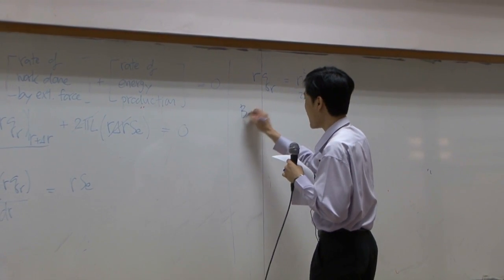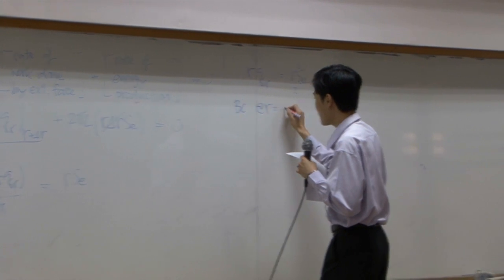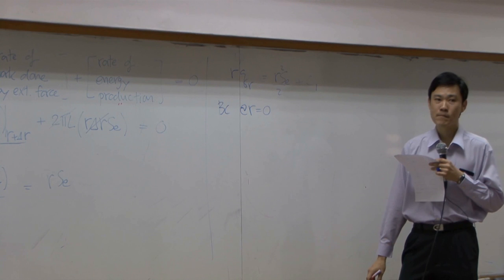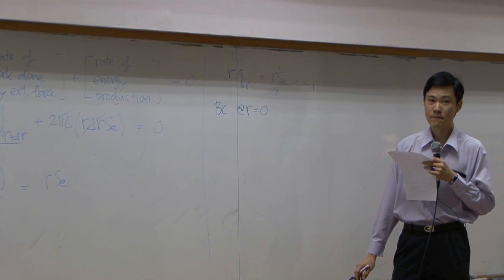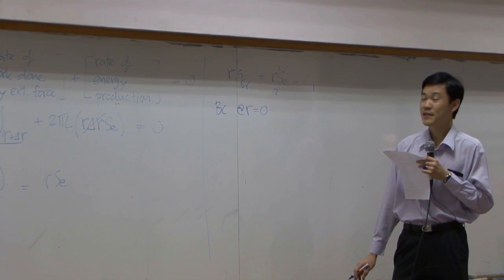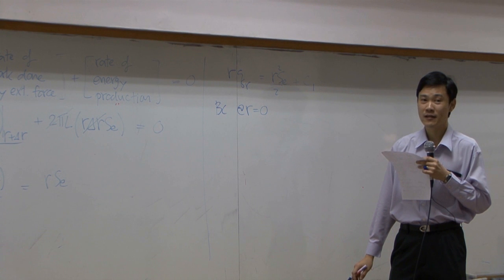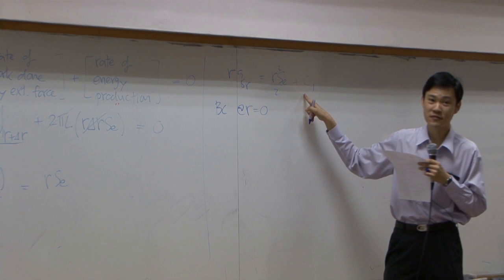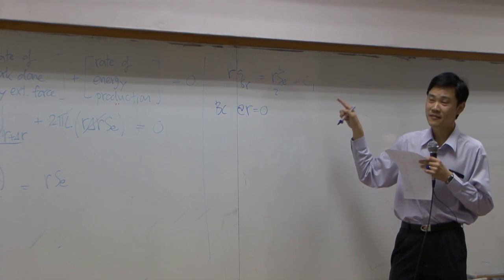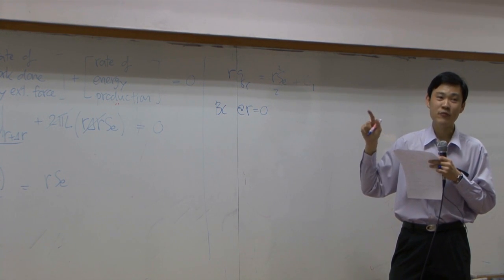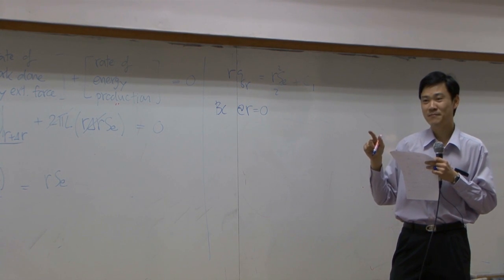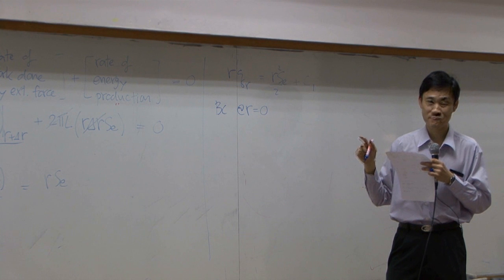At r equal to zero, this is your boundary. At r equal to zero, what is the boundary? Zero. What is zero? C1 is zero. Why? Because this is zero, this is zero, so C1 is zero. It will give you correct results, but bad explanation. Okay?